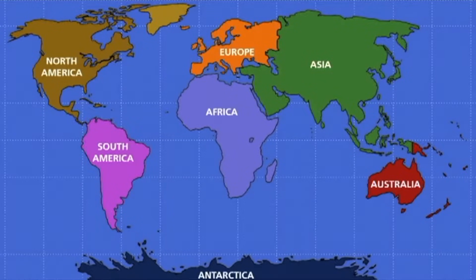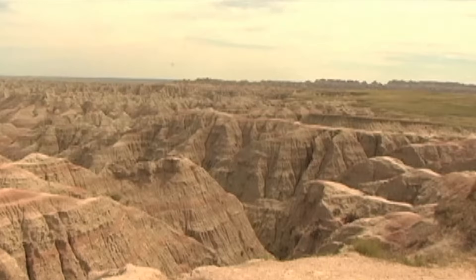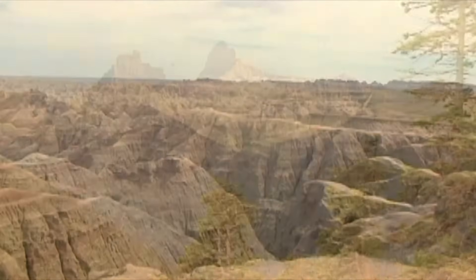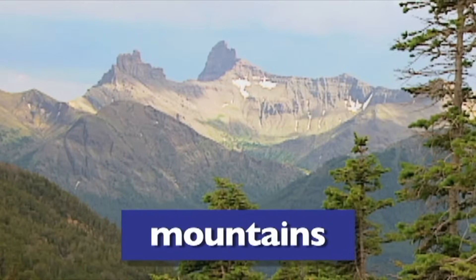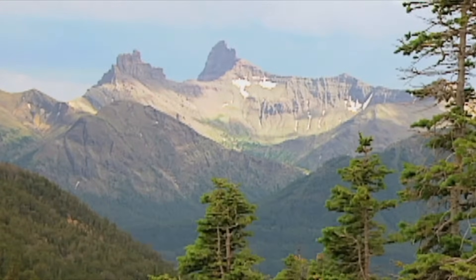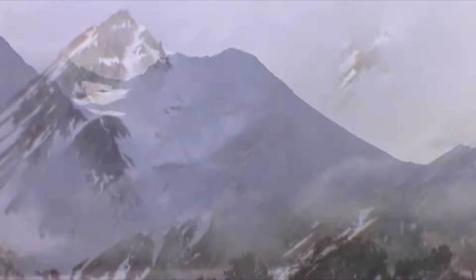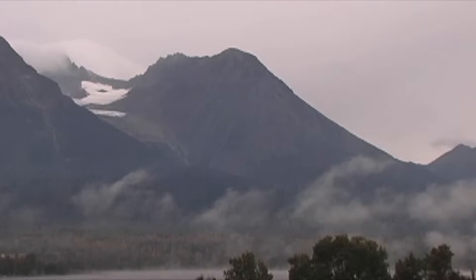On each continent, we can find different landforms. A landform is any natural formation of rock and dirt that is found on Earth. Mountains are landforms. Mountains are found everywhere on Earth. A mountain is any part of the Earth's surface that stands much higher than its surroundings.